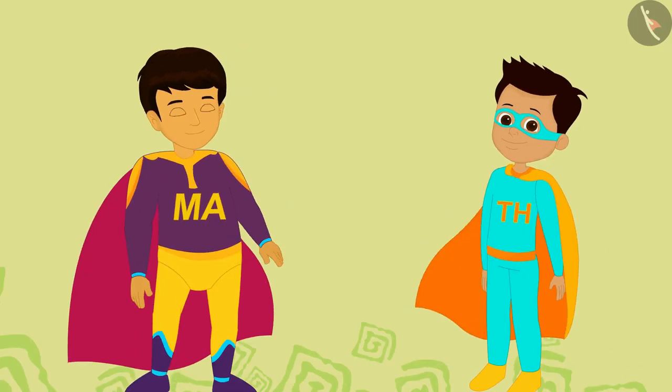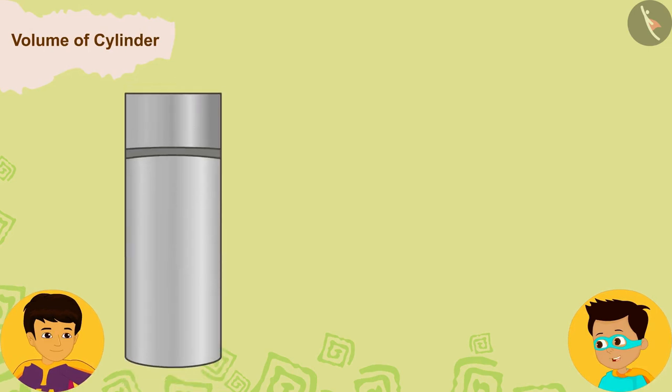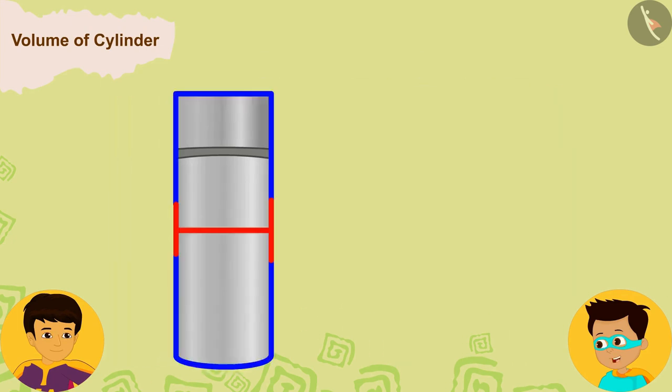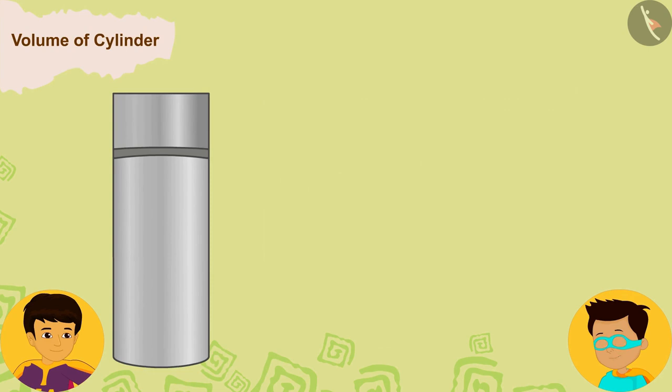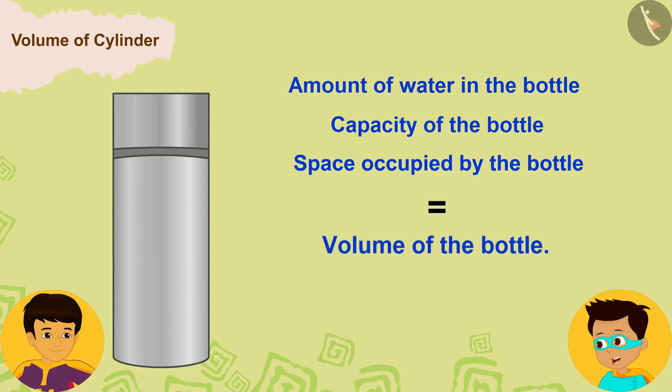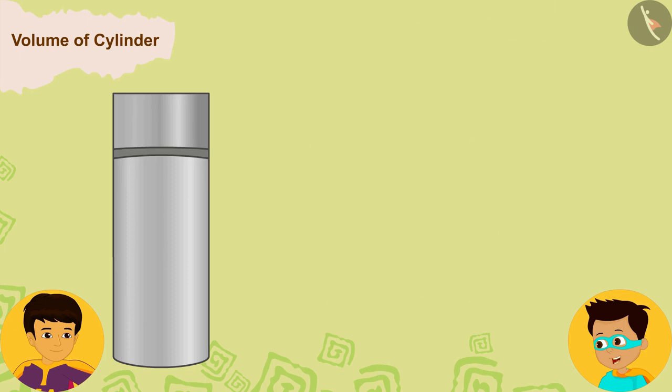Look, my bottle is cylindrical and the amount of water we can fill in it is equal to its capacity. But because the thickness of the bottle is negligible, we say that the amount of water in the bottle, or the capacity of the bottle, or the space occupied by the bottle, in other words, is equal to the volume of the bottle.